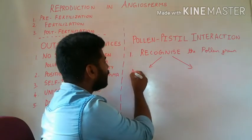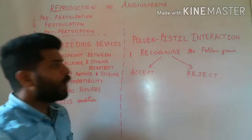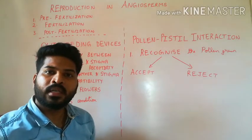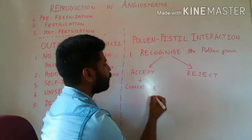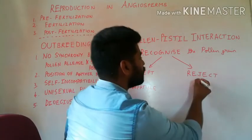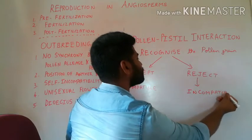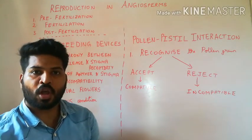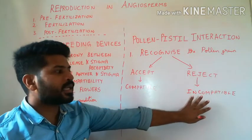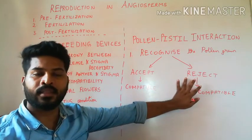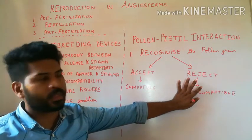Two events can happen: either the stigma will accept the pollen grain or it will reject it. The stigma will accept the pollen grain if it is compatible — of the same type. If the pollen grain is of some other species, it is incompatible and the stigma will reject it. All this is because of the chemical cross-talk between the pollen grain and the stigma surface. If the stigma rejects the pollen grain, pollen germination will not take place or pollen tube growth will not be allowed to continue, thus preventing fertilization.